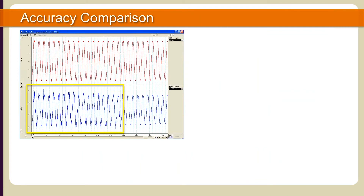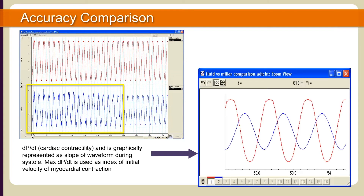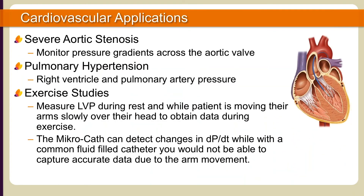In this waveform, we see the effects of tapping both a Millar high-fidelity catheter and a fluid-filled catheter. Notice the artifact collected in the blue channel, where the red high-fidelity signal is not affected by mechanical disturbances along the catheter lead. This plot shows a dP/dt waveform of both the high-fidelity catheter in red and the fluid-filled catheter in blue. The high-fidelity signal is plotted with greater accuracy — notice the time delay and dampened signal of the blue waveform.